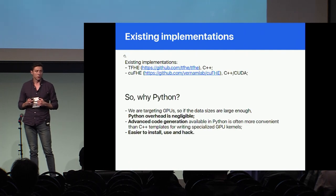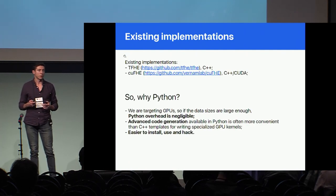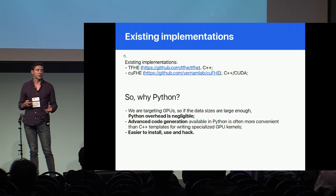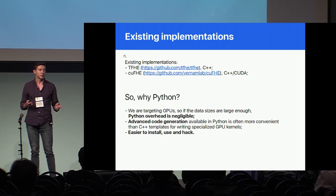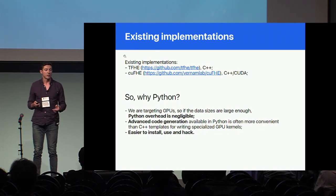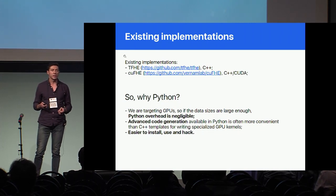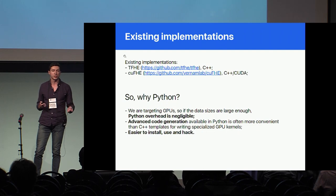There are two existing implementations of FHE on Torus: one is pure C++ called TFHE, and the second is QFHE, which is based on CUDA.